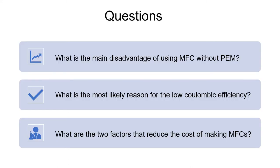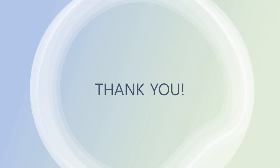In the end, there are three questions about this article. First, what is the main disadvantage of using microbial fuel cells without proton exchange membrane? Second, what is the most likely reason for the low coulombic efficiency? Third, what are the two factors that reduce the cost of making microbial fuel cells? I'm finished. Thank you for watching.